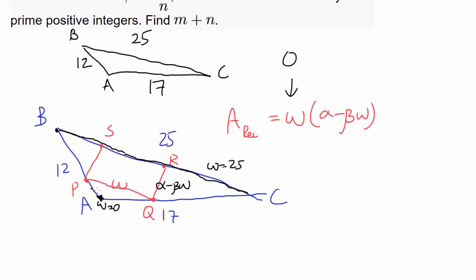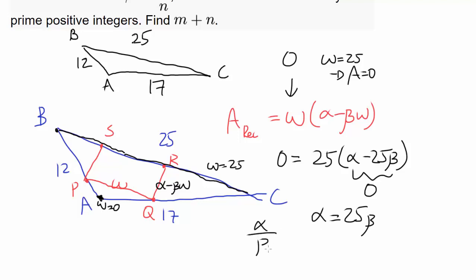Realize W is starting at zero, it's increasing, making rectangles, until it reaches 25, at which point we have a line. So when W is 25, we should get area of zero. So 25 times alpha minus 25 beta equals zero. And that's telling us this part has to be zero, or alpha equals 25 beta. And this tells us alpha divided by beta is 25. So that's very good to know.